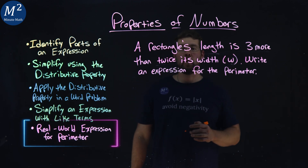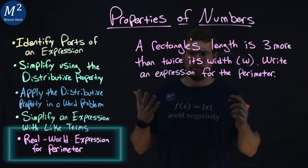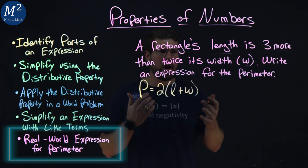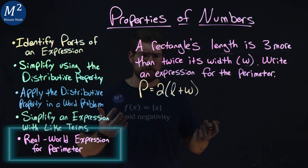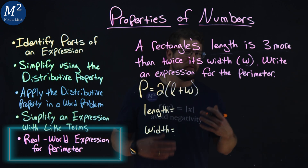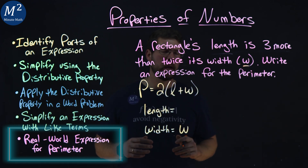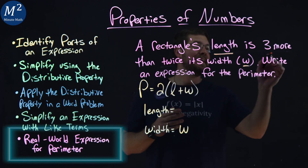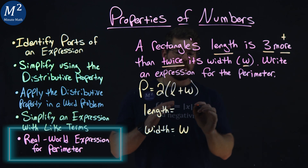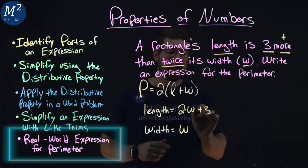A rectangle's length is 3 more than twice its width, w. Write an expression for the perimeter. The formula for perimeter is equal to 2 times the length plus the width for a rectangle. Now I want to identify our width and our length. The width is easy — it's given to us: they just tell us it's w. The length is the tricky part. They tell us that our length is 3 more, which means addition, then twice its width. So we're going to take twice the width — 2 times the width — and then add 3 more, and that is our length: 2w plus 3.